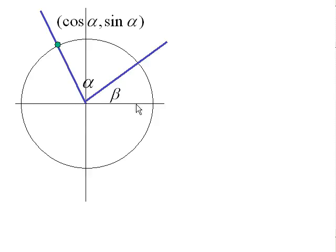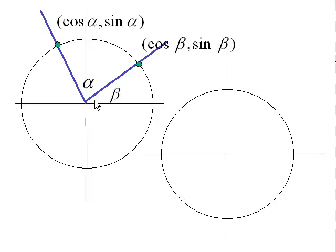Now let's put in beta, and the trig functions for beta correspond to this point on the unit circle: cosine beta and sine beta as its values. Let's look at the angles alpha and beta as determining a difference. If I take alpha and subtract beta from that, that has the effect of only considering the angle opening from the terminal side of beta to the terminal side of alpha. So this angle would be measured by alpha minus beta.